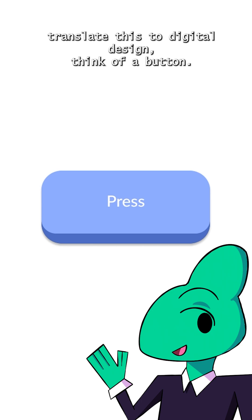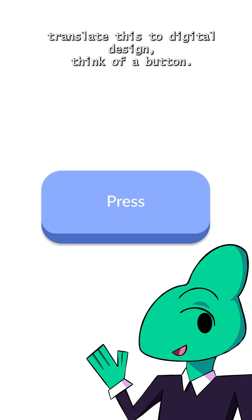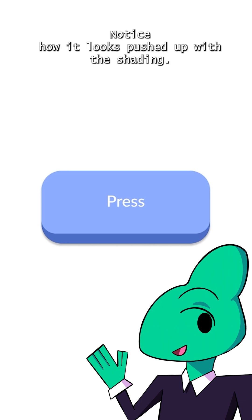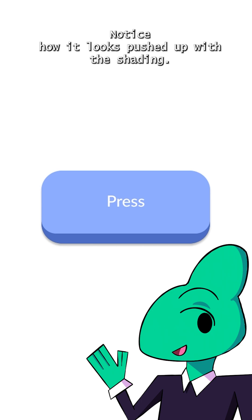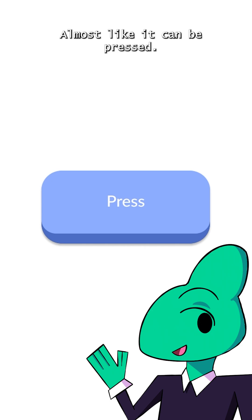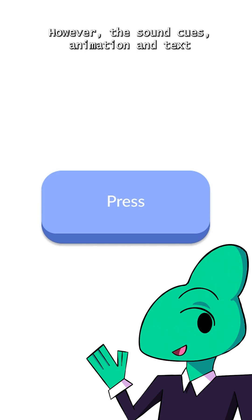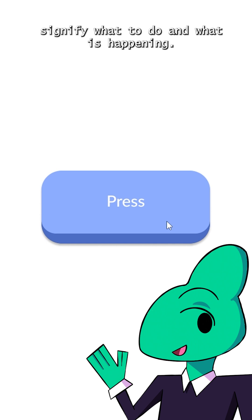Now, a signifier? That would be the sign on the door that says 'push' or 'pull.' If we translate this to digital design, think of a button. Notice how it looks pushed up with the shading — almost like it can be pressed. That would be its affordance. However, the sound cues, animation, and text signify what to do and what is happening.